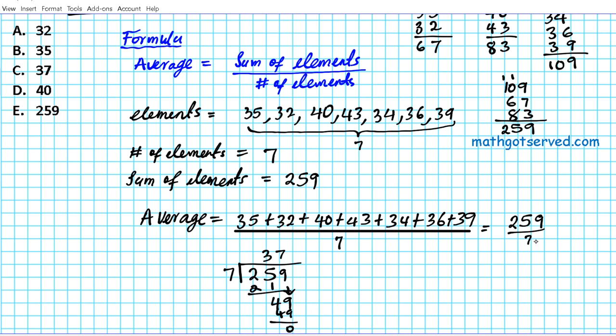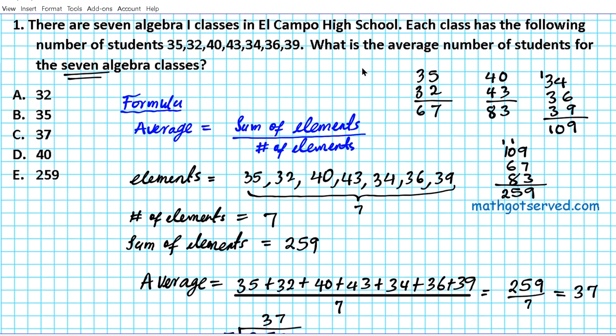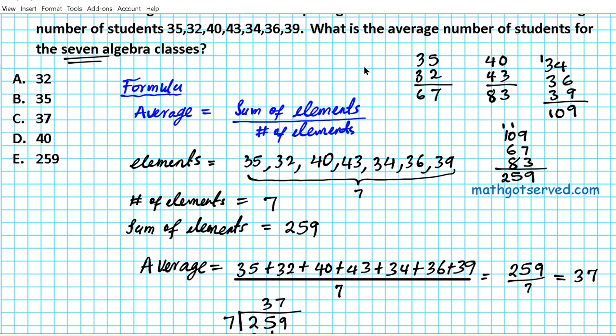All right, so the average number of students in the seven algebra one classes is 37. The answer to question number one is option letter C.